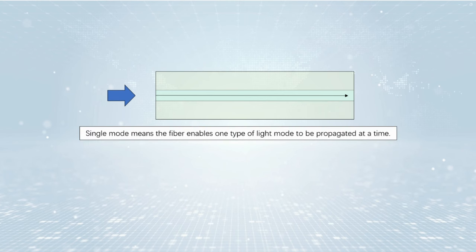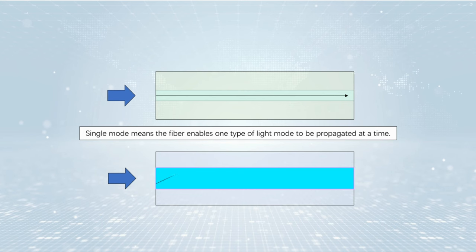When the fiber core diameter is small, only one type of light mode will be propagated at a time. That is single-mode fiber, while multi-mode means the fiber can propagate multiple modes.